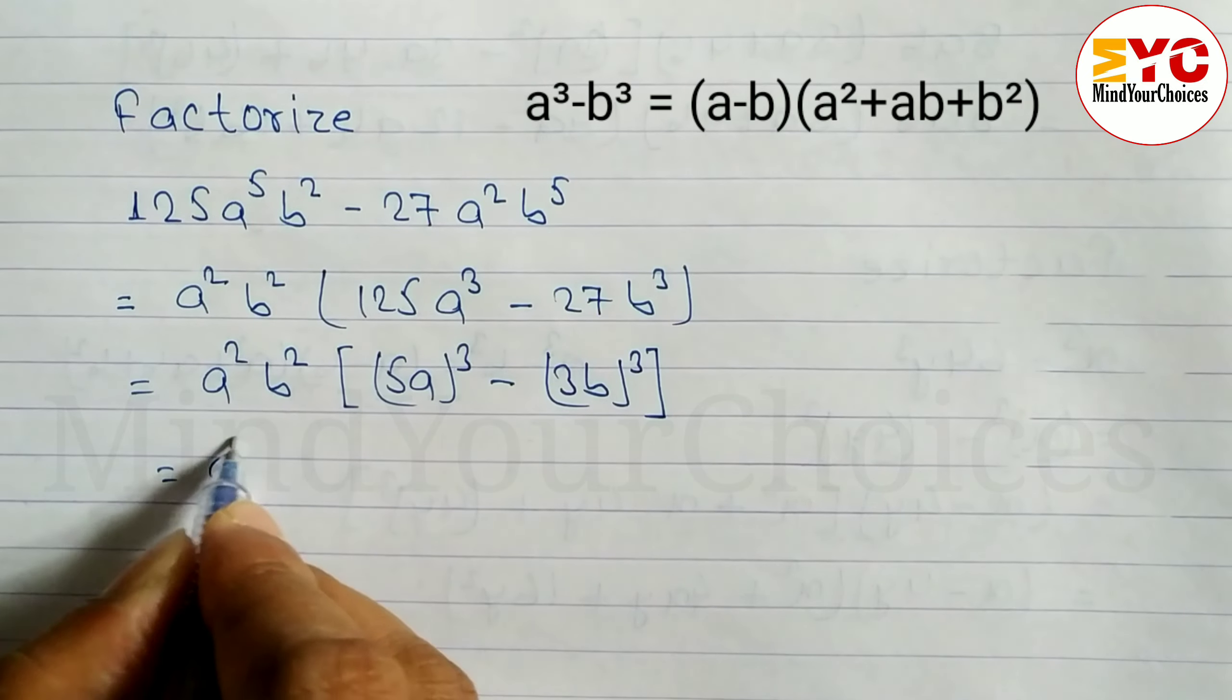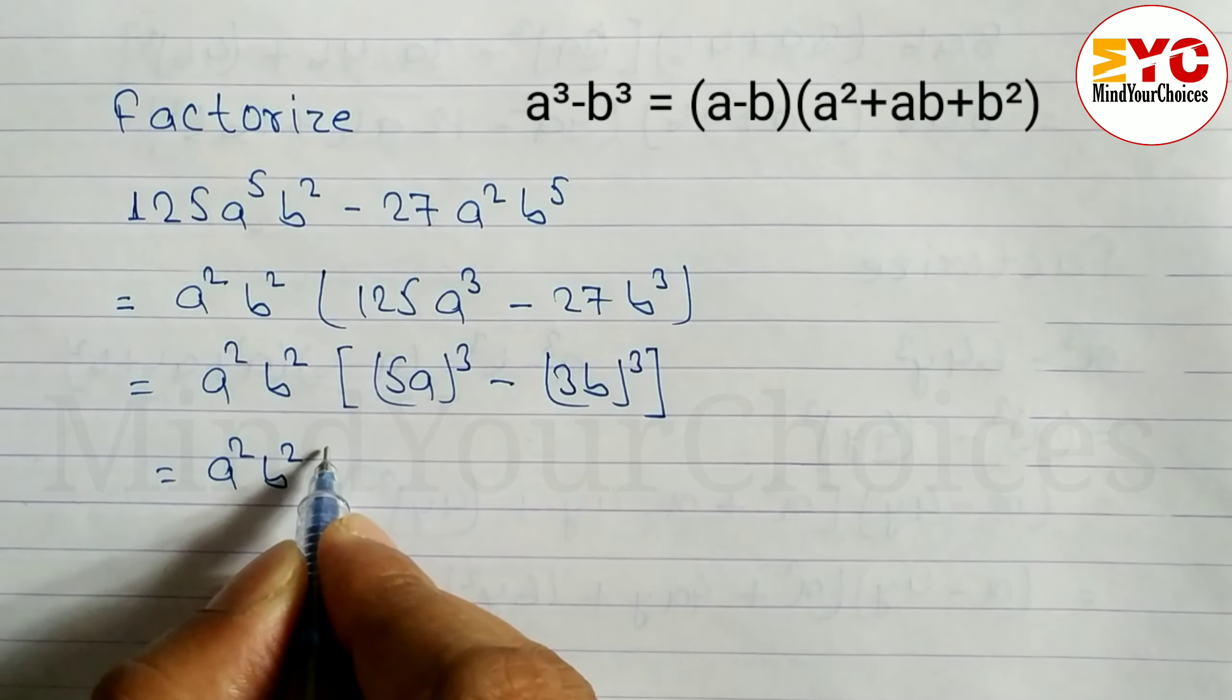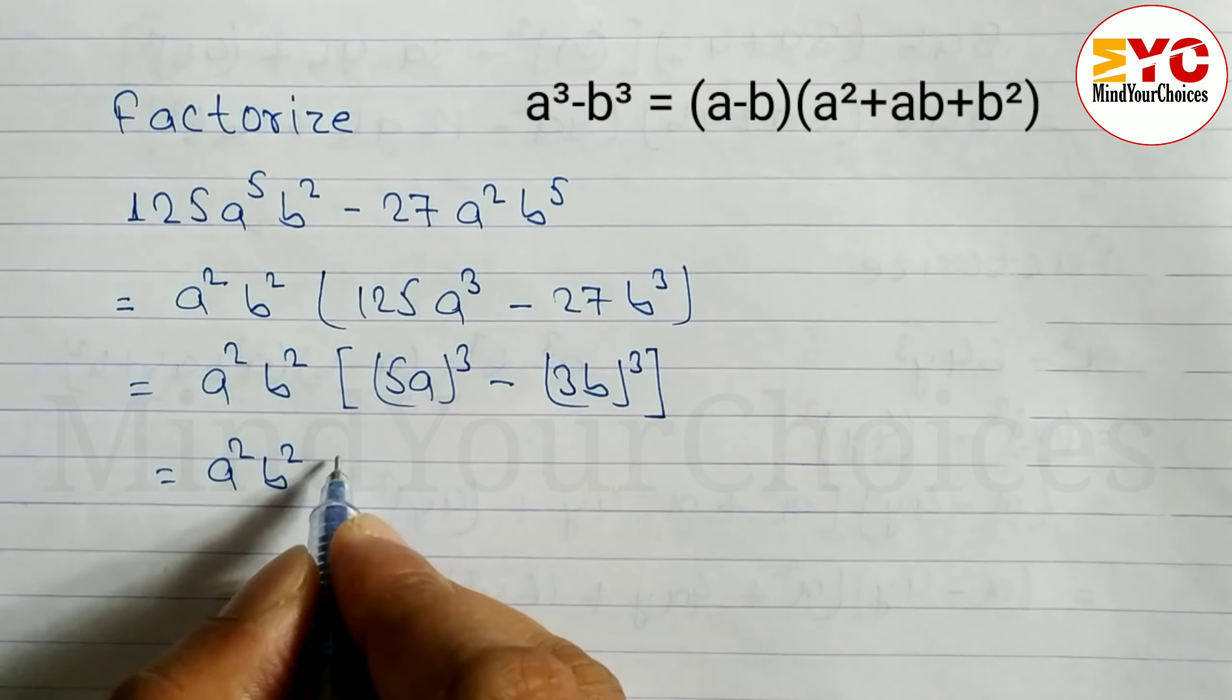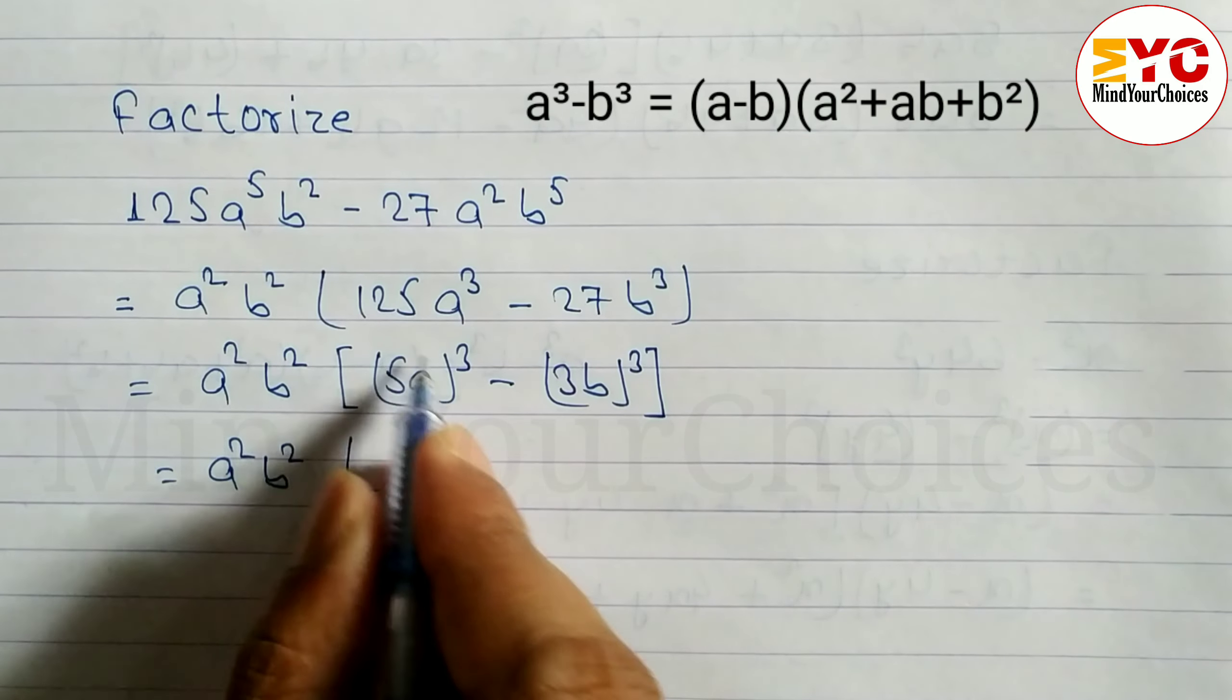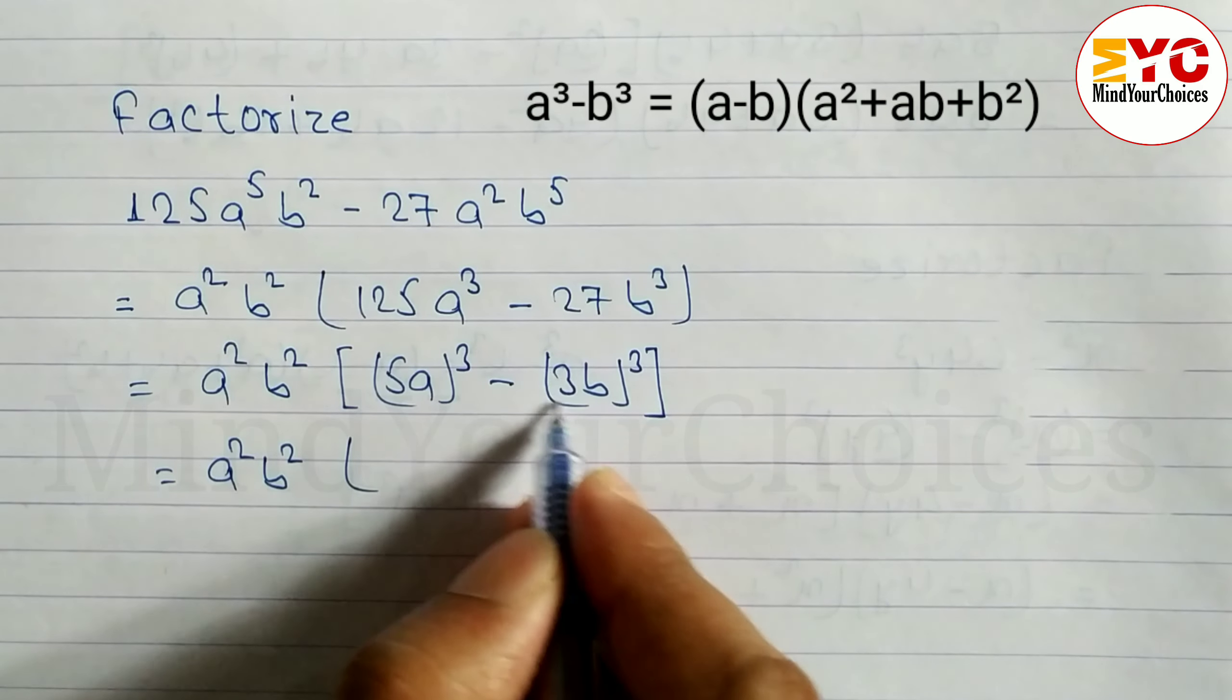We can write a²b² and use the formula for a³ - b³. The formula is (a - b). In the place of a, we have 5a; in the place of b, we have 3b.